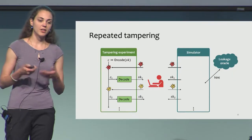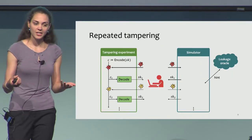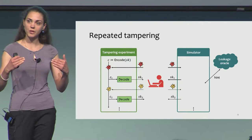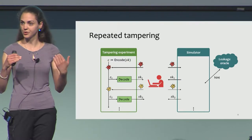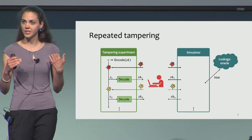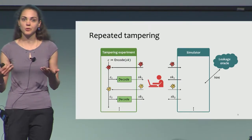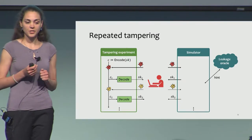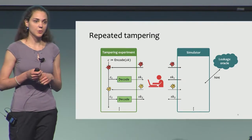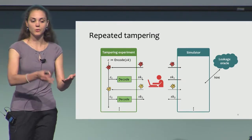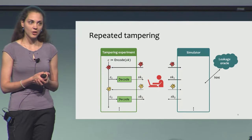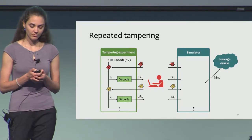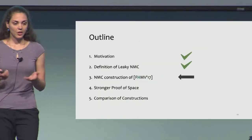This definition can be generalized for repeated tampering. After the first round of tampering, the adversary is allowed to pick another tampering function, which tampers with C1 to produce C2, and the adversary again learns the result of decoding C2.